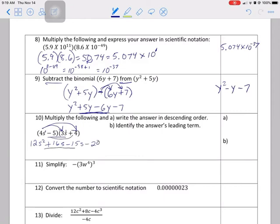And then I have like terms in the middle. So my final answer in order would be 12s squared plus s minus 20. All right? And identify the leading term. The leading term is 12s squared.